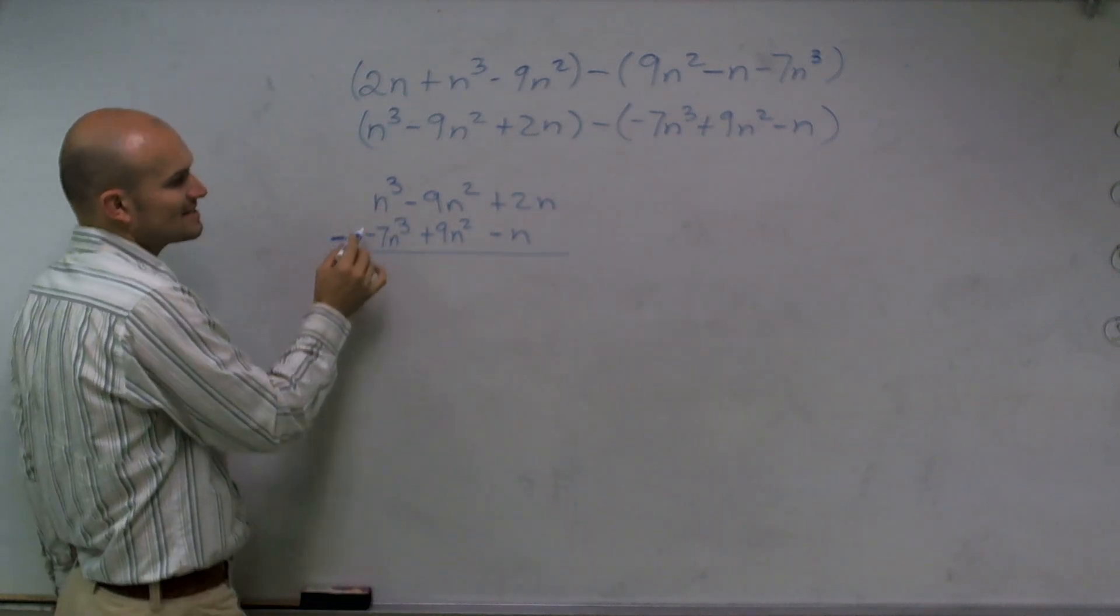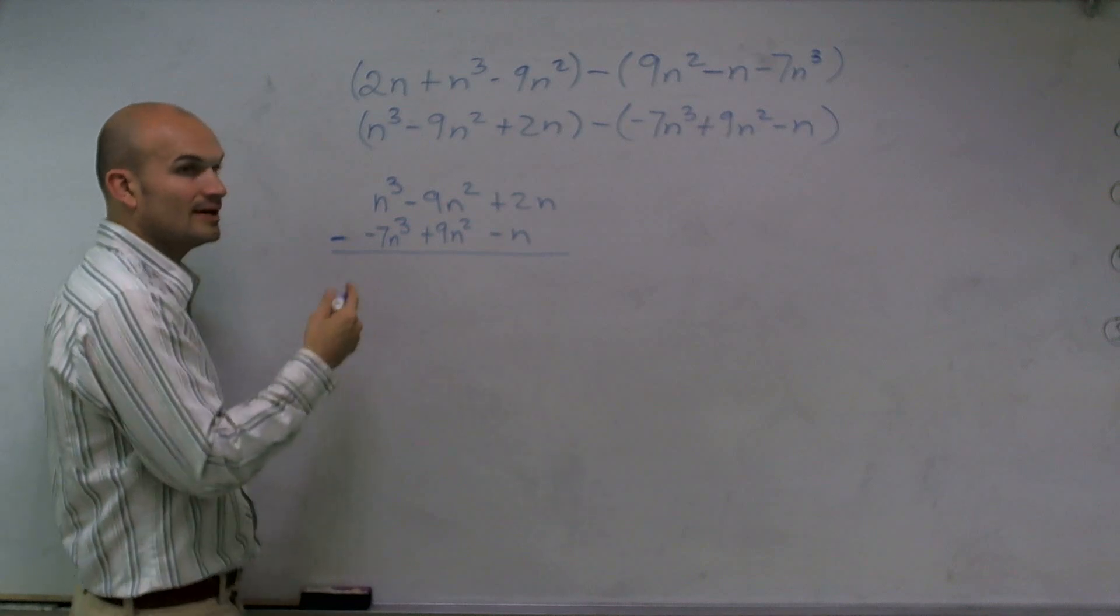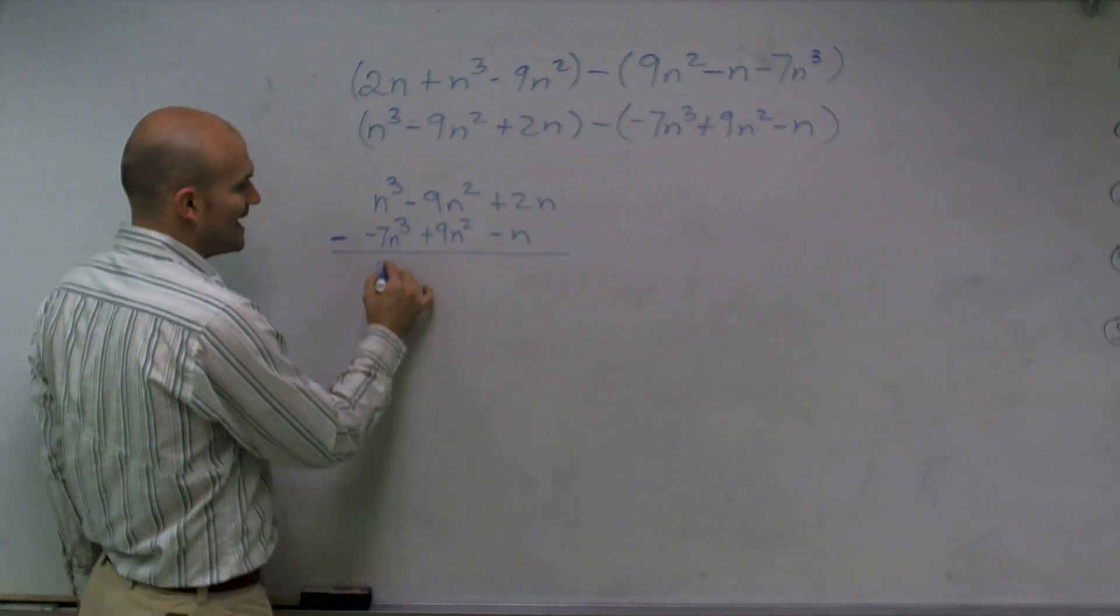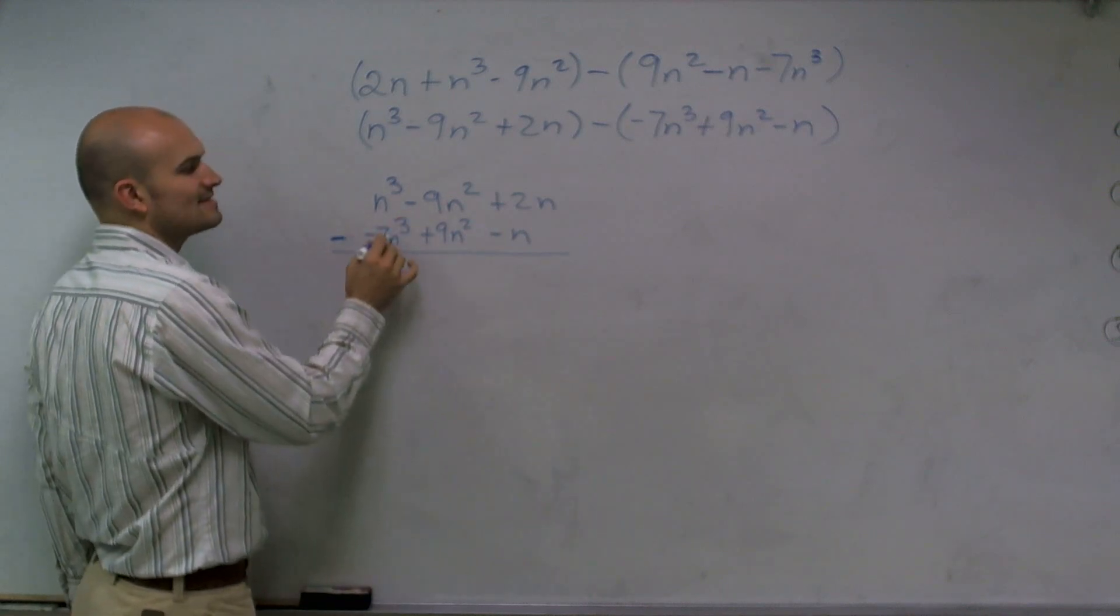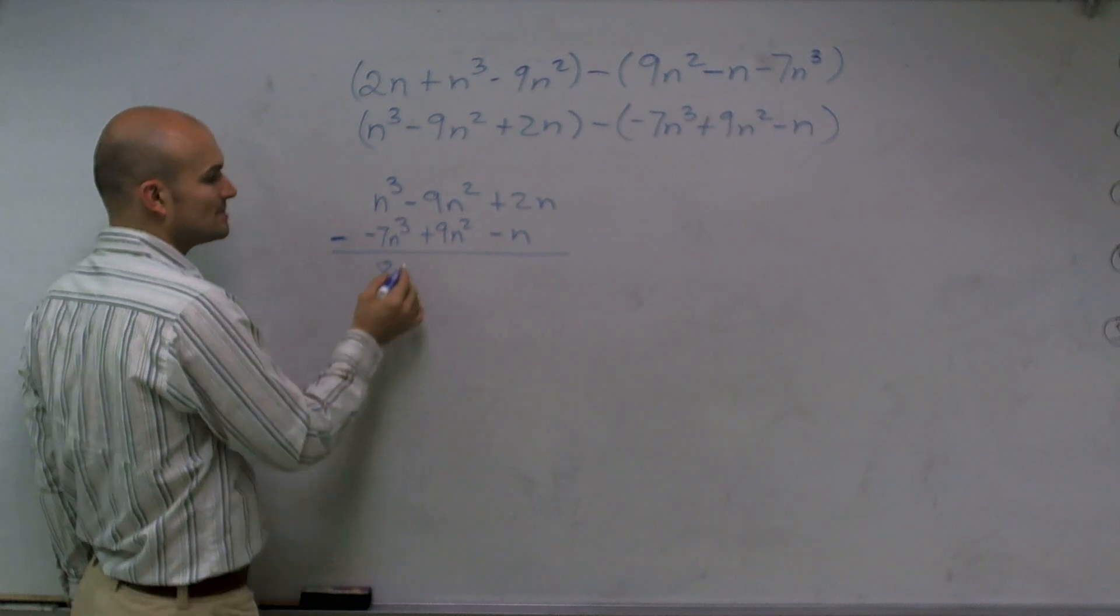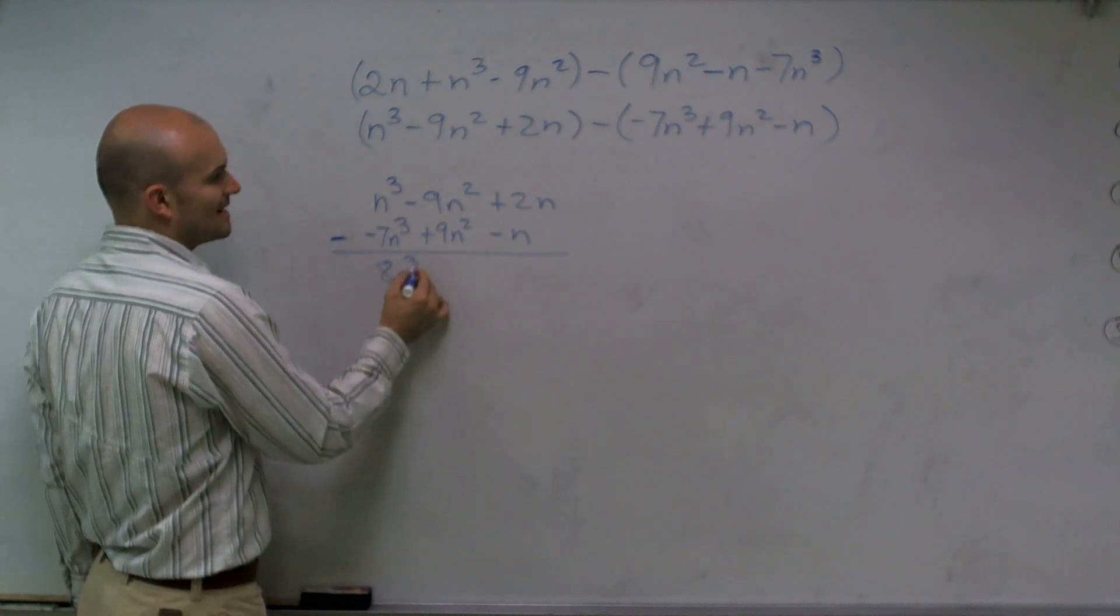n squared minus a negative n squared, that's going to give you double negative, will give me 8, I'm sorry, negative 7n cubed is going to give me an 8n cubed.